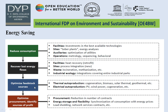Third, optimize feedstock source: thermal auto production — that is co-generation; biomass; solar thermal; geothermal; etc. Electrical auto production: PV, wind power, co-generation, etc. Fourth and last, optimize procurement and identify sources of profit: reduction in number of contracts, energy storage and flexibility, synchronization of consumption with energy price, load shedding, network service contracts, etc.